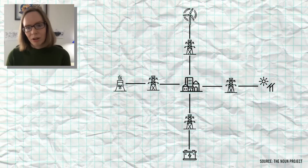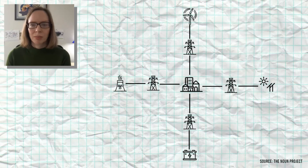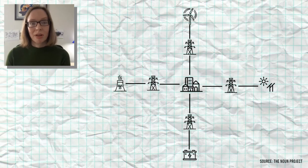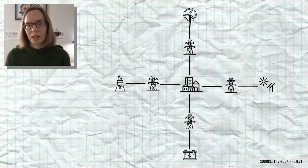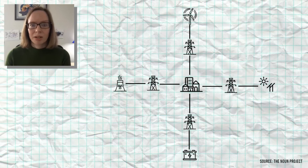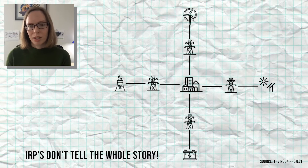IRPs essentially model how much electricity consumers are using — in their homes or places of work. That's surprising to a lot of people and instantly raises questions about the power lines: how power is transmitted to customers, whether we need to adjust infrastructure on the distribution or transmission system. The reality is that IRPs very rarely can give us information about how to do that. There's a big deficit of information about how we transmit electricity that we can't answer through IRPs.